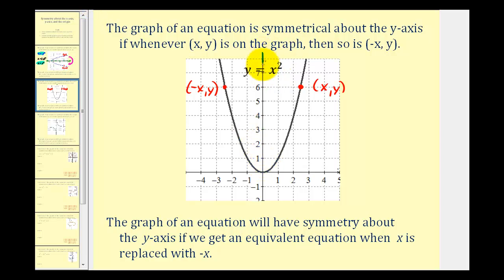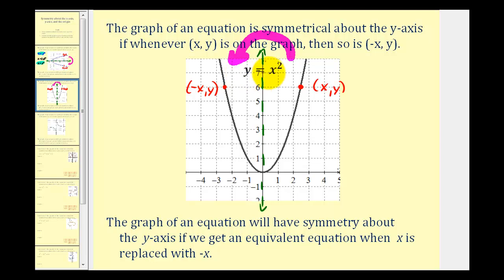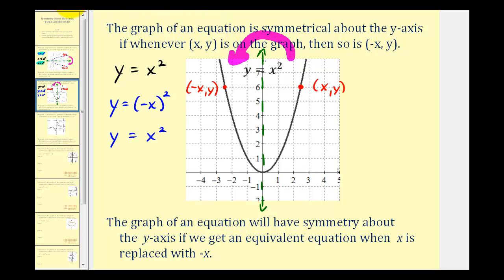Visually, if we fold this graph across the y-axis, or this vertical line, one half of the graph would match up perfectly with the other half. For example, if we folded this to the left, notice how the right side would match up perfectly with the left side, visually verifying y-axis symmetry. Algebraically, the graph of an equation will have symmetry about the y-axis if we get an equivalent equation when replacing x with negative x. The equation of this graph is y equals x squared. If we replace x with negative x, we'd have y equals negative x squared. But negative x squared equals x squared, so we have y equals x squared, which is equivalent to the original equation, algebraically verifying y-axis symmetry.